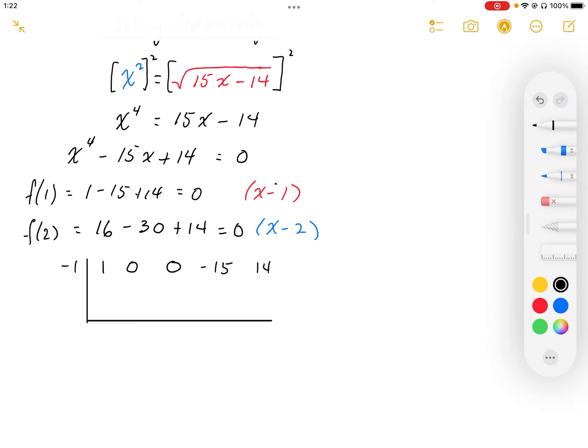So I get negative 1. Subtract, I get 1. I get negative 1. I subtract, I get 1. Multiply, I get negative 1. I subtract, I get negative 14. And then when I subtract those, I get my remainder of 0.